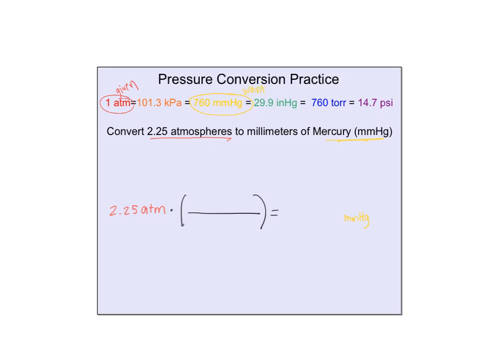What we can do is we can ignore this, this, this, and this. That's all extra information for a different problem. Same idea. Really all we're looking at is 1 atm equals 760 mmHg.